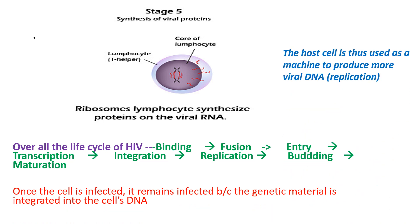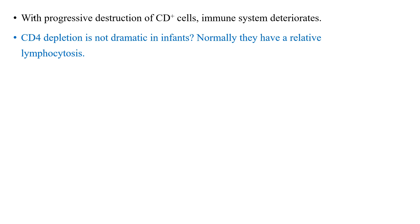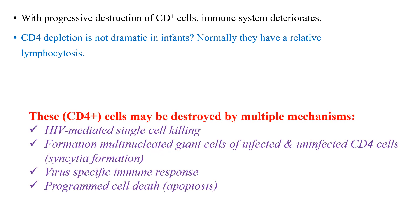Once the cell is infected, it remains infected because the genetic material is integrated into the cell's DNA, and the host cell is used as a machine to produce more viral DNA via replication. With progressive destruction of CD4 cells by this virus, the immune system deteriorates. CD4 cells infected by HIV may be destroyed by multiple mechanisms: HIV-mediated single cell killing, formation of multinucleated giant cells of infected and uninfected CD4 cells, virus-specific immune response, and programmed cell death.